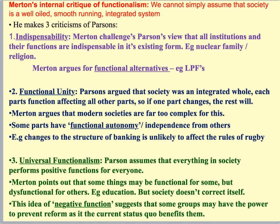Merton also critiqued this idea of functional unity. Parsons believed that every single part of society was integrated — if something happened in one part of society, it would affect another. Merton argued that in a modern society — even a postmodern society — societies are far too complex for this. Many aspects of society are not connected to other areas; they have what's called functional autonomy or independence from others. For example, if you change the structure of banking or the rules that guide banking, that's unlikely to affect the rules of rugby. There are clearly areas of society that are not going to affect one another.